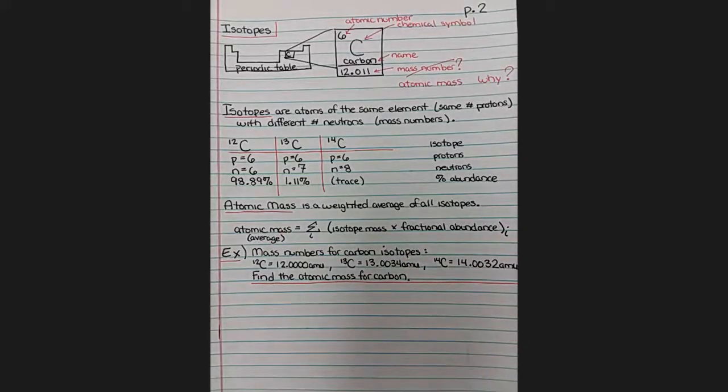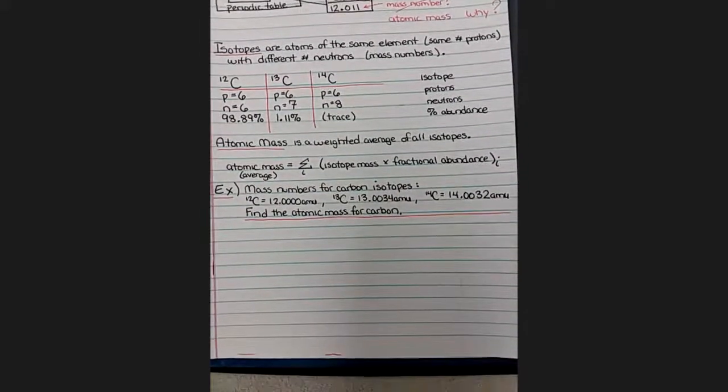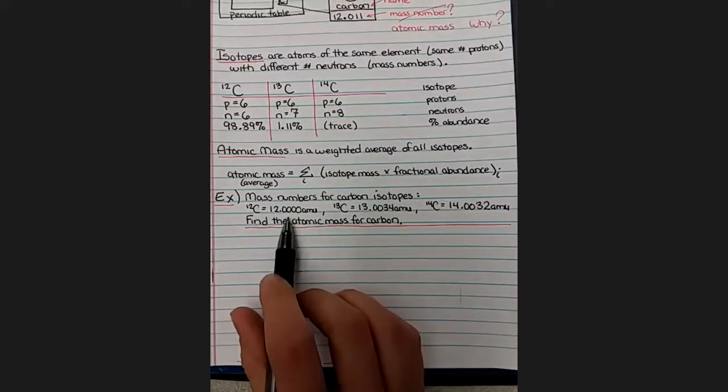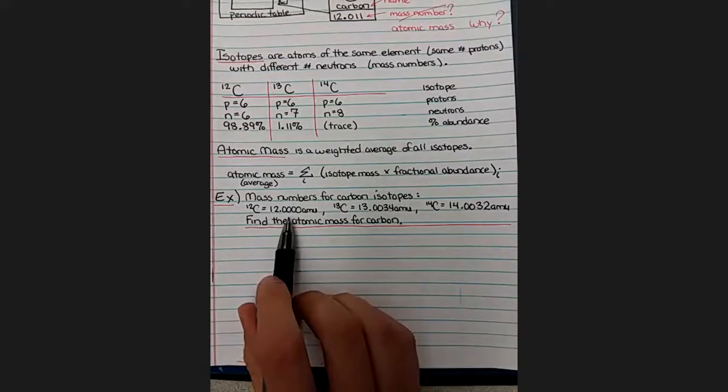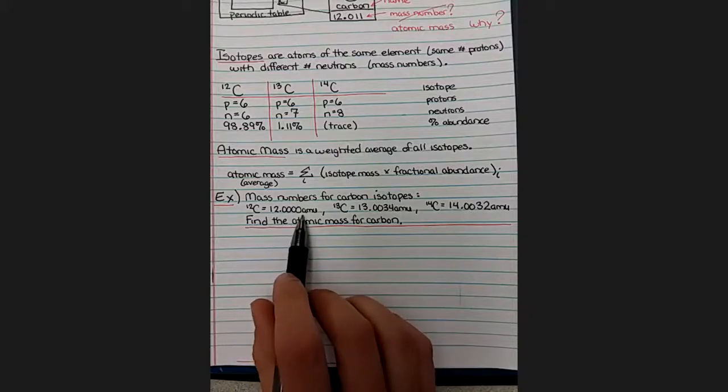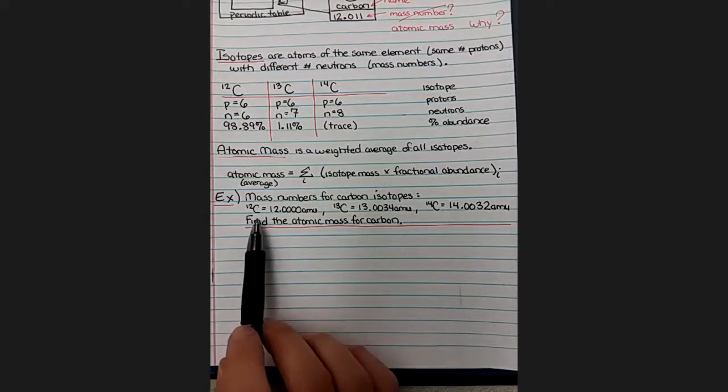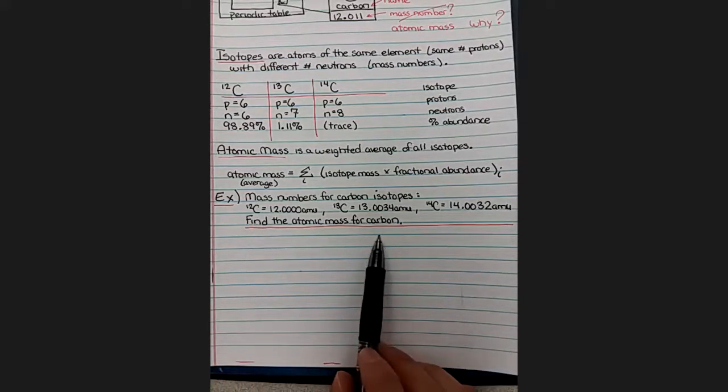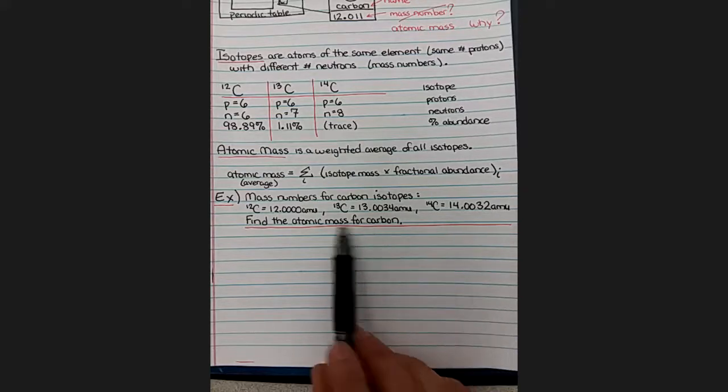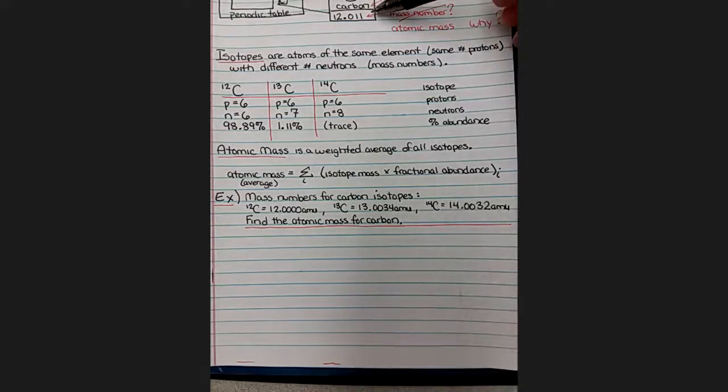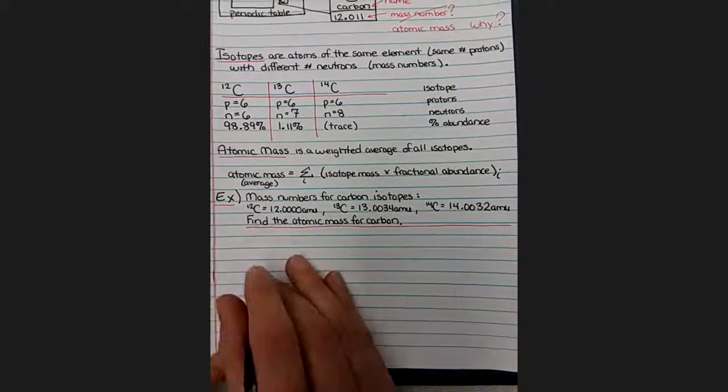So let's try doing an example. Here I've given the mass numbers for carbon 12, 13, and 14 to a few more significant figures, to six significant figures here so we can get a really precise answer. And why don't you test out your math skills, see if you can calculate an atomic mass for carbon using this information that matches the number listed in the periodic table. I'll pause here if you want to calculate that yourself. And now I will calculate it.